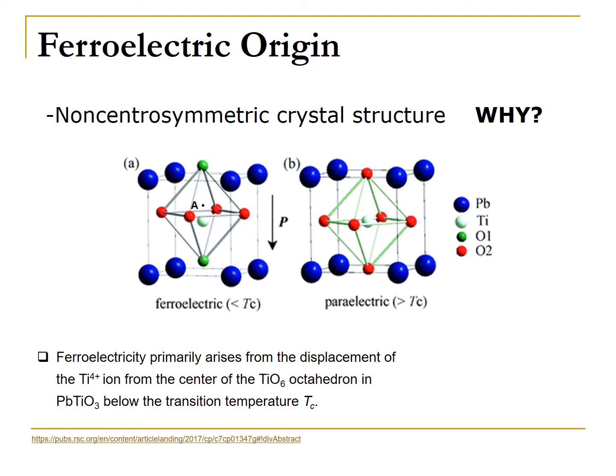Above lead titanate's ferroelectric transition temperature T, the crystal structure is deformed and the titanium atom becomes placed in the center of the cell. The charges of all the atoms then cancel out and there is no longer a dipole moment or net polarization of the material, although it can be polarized if an electric field is applied. This behavior demonstrates the paraelectric property.